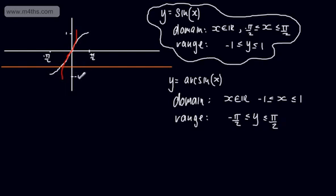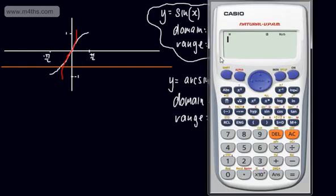So on your calculator, if we put this in radians and did shift sine — the inverse sine — of minus 0.5, this is going to give us minus pi by 6. We can see that this is giving us values in the interval between minus pi by 2 and pi by 2.